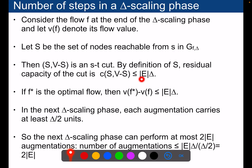And the residual capacity of that cut is at most the number of edges times delta. We know that because we have removed all the edges that are less than delta. So if f* is the optimal flow that we need to reach, then the gap at that step, the gap between the two, is at most this.